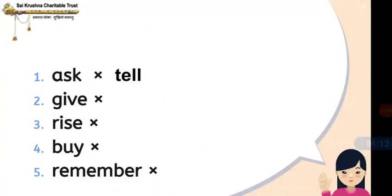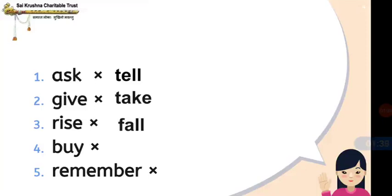Give. You have to tell — I will give the hint. The starting letter is T. Now you tell. It is take. Give — take. And next we have rise. The opposite of rise — I will give the hint, that is F. That is fall.